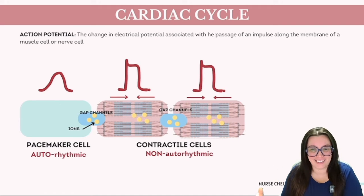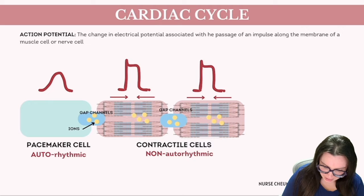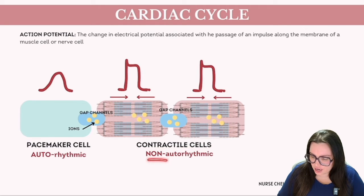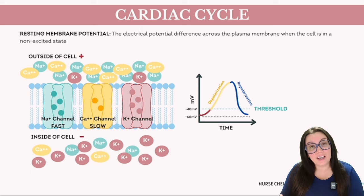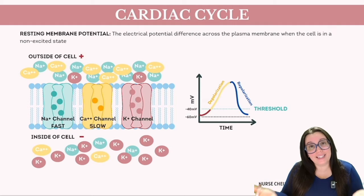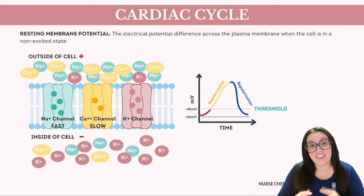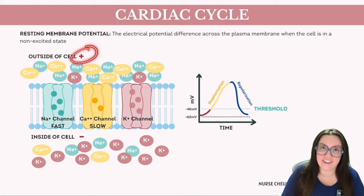Pacemaker cells and contractile myocytes demonstrate distinct types of action potential, each tailored to specific roles. Pacemaker cells are autorhythmic, showing a gradual depolarization curve, while contractile cells show an initial high voltage increase before falling into repolarization. In a resting state, a cell membrane's resting membrane potential typically has a negative value, indicating the interior of the cell is more negatively charged compared to the exterior.